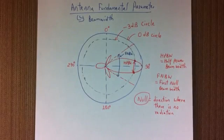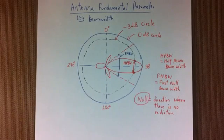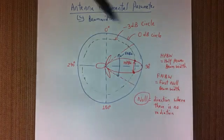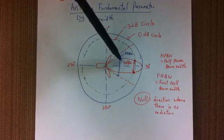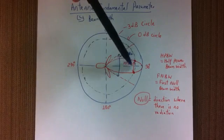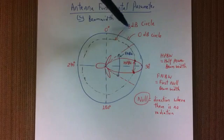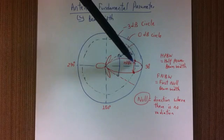Beam width of an antenna is basically the width of a radiation pattern of an antenna at different points. First, we have half power beam width (HPBW), and this is basically at the negative 3 dB point.